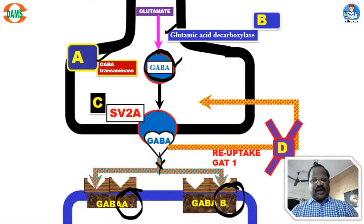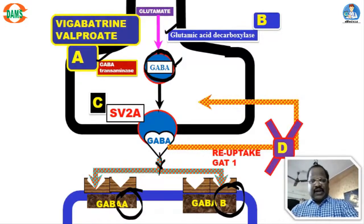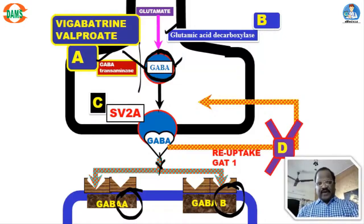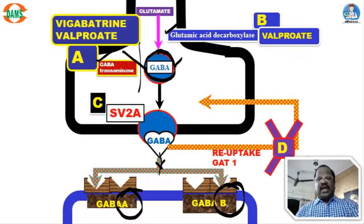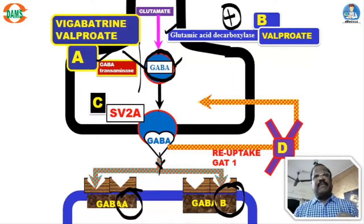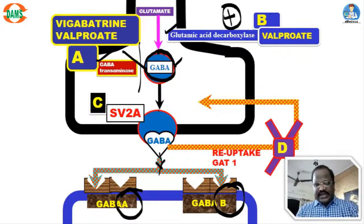Now we discuss what drugs act on letters A, B, C, D. First, drugs acting on letter A means drugs acting by inhibiting GABA-transaminase. The two most important GABA-transaminase inhibitors are sodium valproate and vigabatrin. Sodium valproate also has a stimulatory action on glutamic acid decarboxylase — meaning valproate promotes synthesis of GABA as well as preventing metabolism of GABA. This is a dual action: valproate promotes synthesis by activating glutamic acid decarboxylase and inhibits degradation of GABA by inhibiting GABA-transaminase.